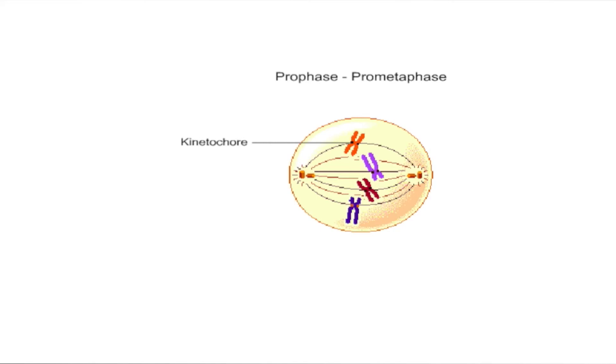Those microtubules that extend from the centrioles to the centromere of the sister chromatids are called kinetochore microtubules. Those that extend from centriole to centriole at opposite ends of the cell are called polar microtubules.